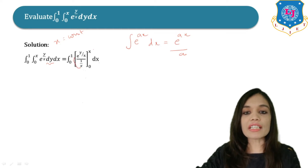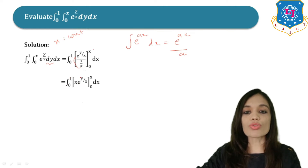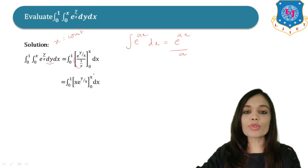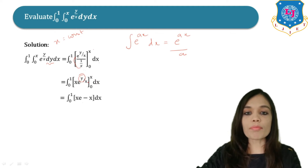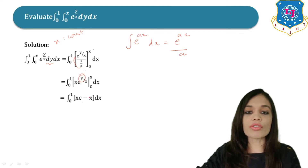We take x into the numerator. So finally we get the integral from 0 to 1 of x · e^(y/x) evaluated from y = 0 to y = x, times dx. Now putting the limit y = x: x/x becomes 1, so we have x · e. Putting y = 0: e^0 = 1, so what remains is only x.